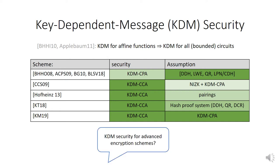Now the question is: what about KDM security for more advanced encryption schemes? In fact, examples such as fully homomorphic encryption require circular security of more advanced encryption schemes than simple vanilla public key encryption. Our contribution tackles the case of identity-based encryption, which is one of the simplest non-trivial generalizations of public key encryption. It's fairly well understood — you can build IBE from all the assumptions that give public key encryption — so it's a natural starting point.